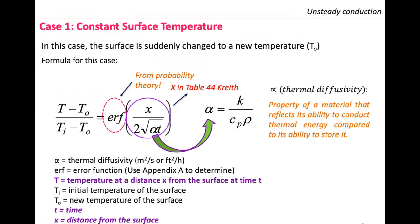The first case for a semi-infinite region is constant surface temperature, where the surface is suddenly changed to a new temperature T₀. The equation uses the error function: the dimensionless temperature equals the error function of x over 2√(αt), where this argument is the x value used in Table 4-4 of the textbook. You can also use a calculator with probability functions that includes the error function.